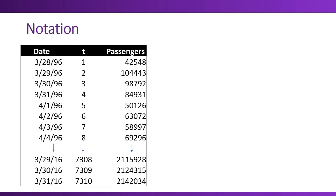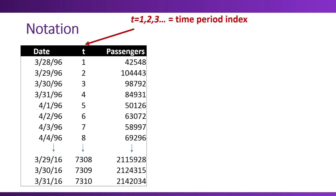You'll notice that I added a column called T. What T is, it's a time index that tells us which period we're in. In this example, T equals one is the first day, T equals two is the second day — that's because we have daily data.